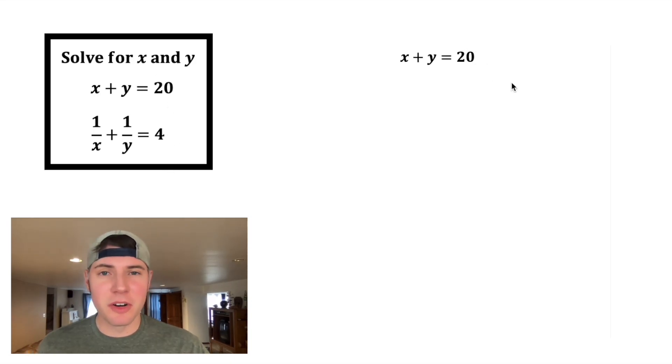Let's copy down the first equation and get one of the variables alone. So I'm gonna subtract x from both sides and get y equals 20 minus x. This is gonna be important, so let's put a box around it, get rid of this stuff and bring it up.